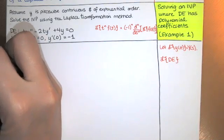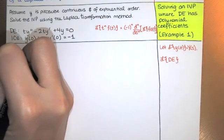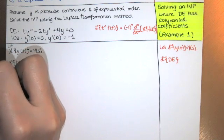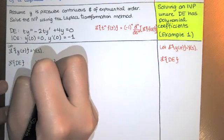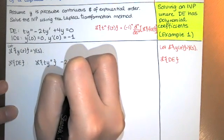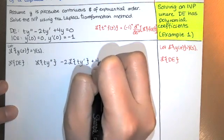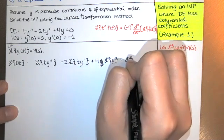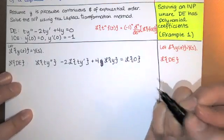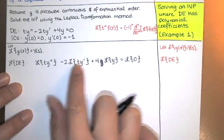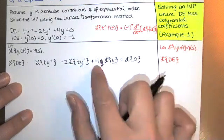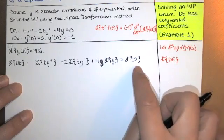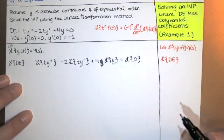We want to compute the Laplace transform of the differential equation. So we have the Laplace transform of t times y double prime, minus 2 times the Laplace transform of t times y prime, plus 4 times the Laplace transform of y, equals the Laplace transform of 0. This term and this term are going to require us to use that theorem. The 4Y(s) term is straightforward, and the right-hand side is of course 0.